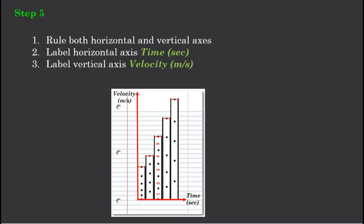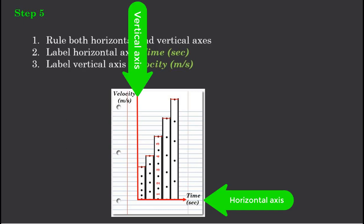Next, we include an axis. We carefully add a vertical and a horizontal axis. The horizontal axis will be labelled time in seconds and the vertical axis will be labelled velocity in metres per second.